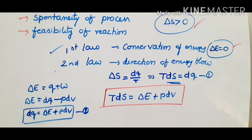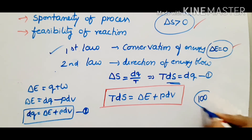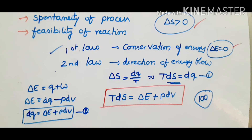The Kelvin-Planck statement says it is impossible to construct a heat engine of 100% thermal efficiency. We need some energy compensation — we cannot achieve 100% heat efficiency. That is the second law according to the Kelvin-Planck statement.